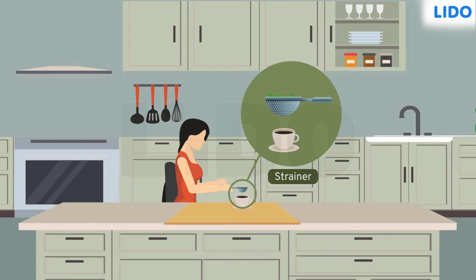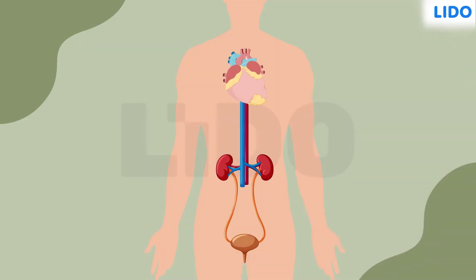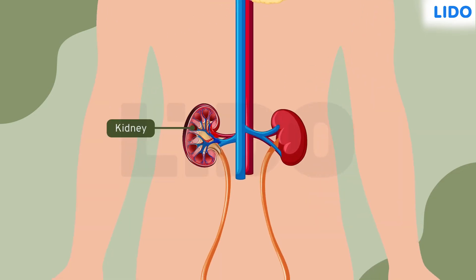It's insightful to know that just like the strainer, our bodies also have an organ that helps in filtering and removing unwanted materials from the body. The organ performing these functions is called the kidney.